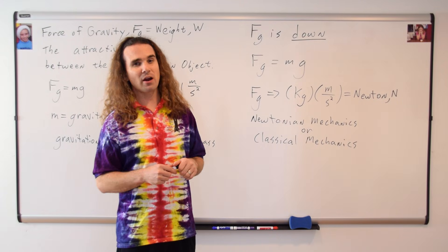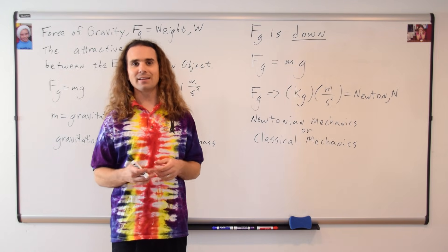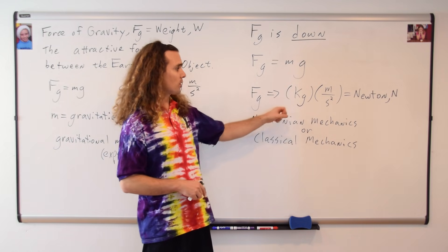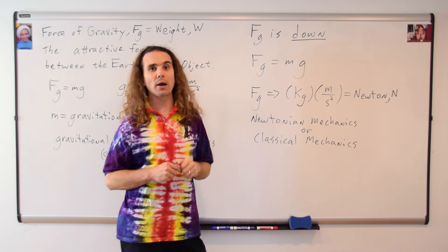Newtonian mechanics describes the motions of macroscopic objects or large objects like baseballs or planets, moving at speeds small relative to the speed of light. Right. So then a Newton specifically is the force required to accelerate one kilogram of mass at one meter per second squared.